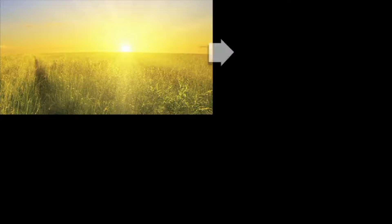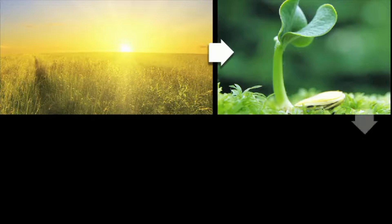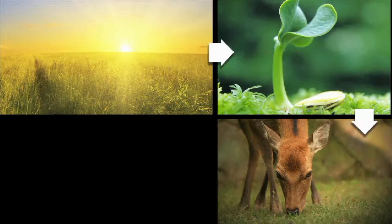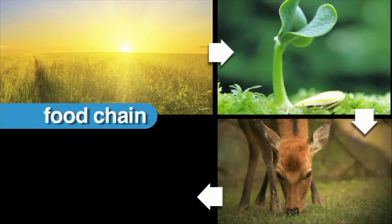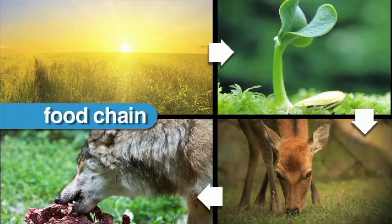To better understand how organisms get energy, we use a food chain. A food chain shows the relationship between the plants and animals in an ecosystem.